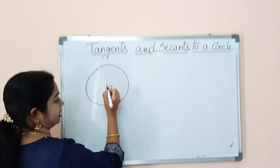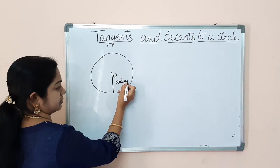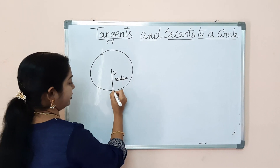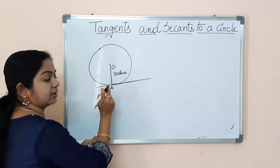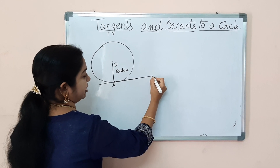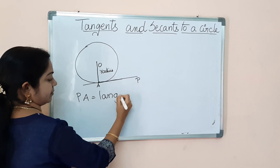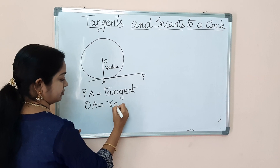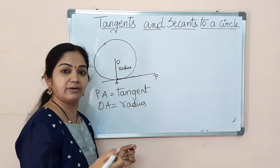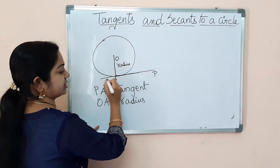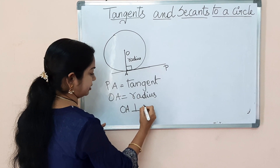Let's take one circle with center O. The line from the center to the circle is the radius. Let the point of contact be A, and if I draw a tangent — as we know, a tangent is a line just touching the circle at one point of contact — so A is the point of contact. I am drawing from an external point P, so PA is the tangent and OA is the radius of the circle. There is a lemma in tangents and secants. A lemma is a proven statement, already proved. According to the lemma, the radius of a circle is always perpendicular to the tangent.